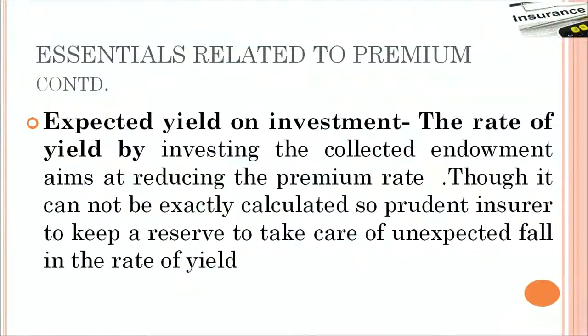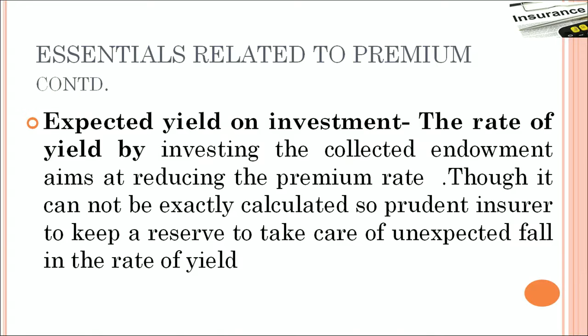Expected yield on investment — the rate of yield by investing the collected endowment aims at reducing the premium rate. When you are taking the premium from individuals, they are being invested into long-term projects, and the interest or yield which they get in return from those investments is referred to as the expected yield, and it helps in reducing the premium rates. Though it cannot be exactly calculated, a prudent insurer has to keep a reserve to take care of unexpected fall in the rate of yield. Because investments are in long-term projects, it is not possible for the insurer to quote a particular rate of return, but he has to take care of unexpected ups and downs in the yield.